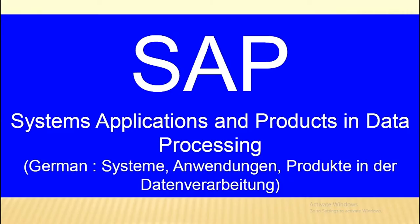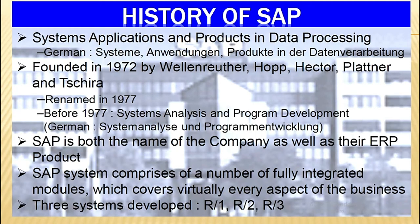History of SAP: SAP stands for Systems, Applications, and Products in Data Processing — in German, System Anwendungen Produkt in der Datenverarbeitung. SAP was founded in 1972 by Wellenreuther, Hopp, Hector, Platner, and Tschira. It was renamed in 1977. Before 1977, the name was Systems Analysis and Program Development — in German, System Analyse und Programmentwicklung.